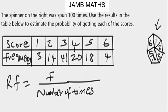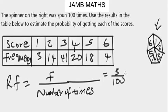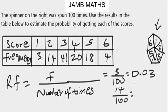We will divide each of the frequencies by 100 to find the relative frequencies. When the score is 1, the relative frequency is 3 over 100, which gives us 0.03. When the score is 2, the relative frequency is 14 over 100, which gives us 0.14.